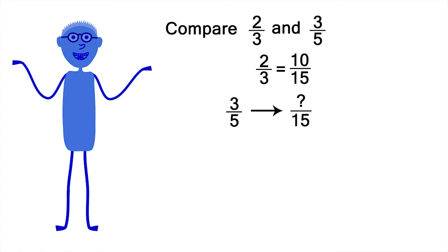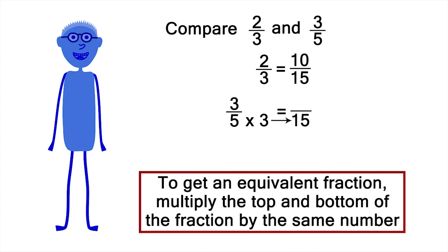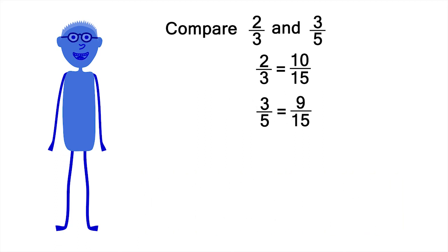Let's convert three-fifths to an equivalent fraction with fifteenths as a denominator by the same method. What do you have to multiply five by to get fifteen? Three. To get an equivalent fraction, whatever you multiply the bottom half of a fraction by, you also have to multiply the top half of the fraction by. Three times three is nine. So, three-fifths and nine-fifteenths are equivalent fractions.